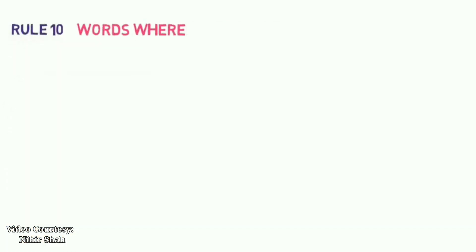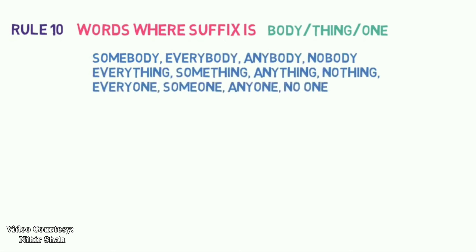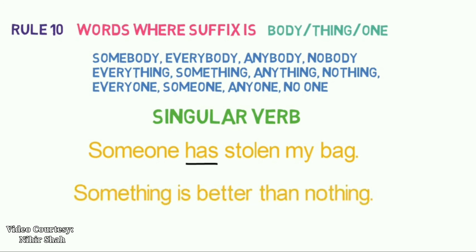Rule 10: Use of words where the suffix is 'body,' 'thing,' or 'one' in a sentence. These words include: somebody, everybody, anybody, nobody, everything, something, anything, nothing, everyone, someone, anyone, no one. These words carry a singular verb. For example: 'Someone has stolen my bag.' We use 'HAS' because 'someone' is used. 'Something is better than nothing.' We use 'IS' because 'something' is used. Words with suffix 'body,' 'thing,' or 'one' will carry a singular verb.